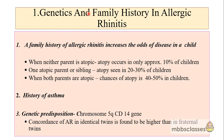Now let's see the role of genetics and family history in allergic rhinitis. If a patient has a family history of allergic rhinitis, it increases the odds of having the disease in a child. If neither of the parents is atopic, then the chances of atopy in children is still 10%. When one of the parents is atopic or if one sibling is atopic, then the chances of atopy increase to 20 to 30%. When both parents are atopic, the chances of atopy is about 40 to 50% in the children.